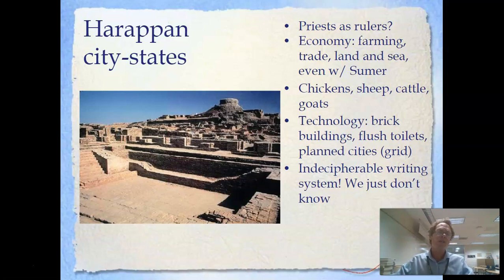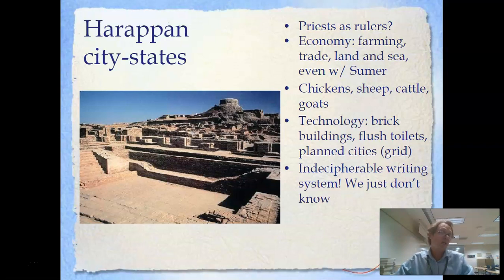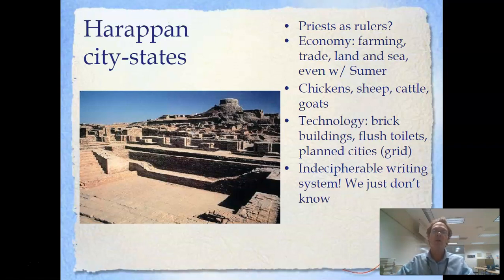The economy was farming and herding. At this point in time, they do have some trade, both on land with people close by and seaborne trade across bodies of water — even reaching as far as Sumer or Mesopotamia. We know this because we find Indian trade goods in Mesopotamia and Mesopotamian trade goods in the Indus River Valley.